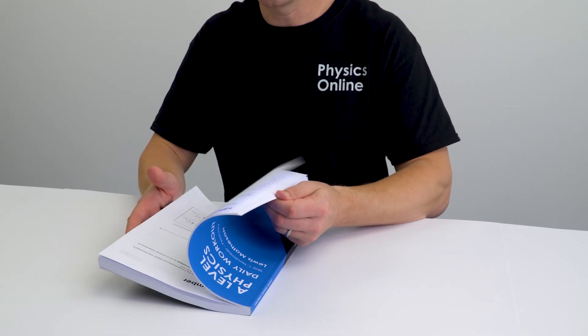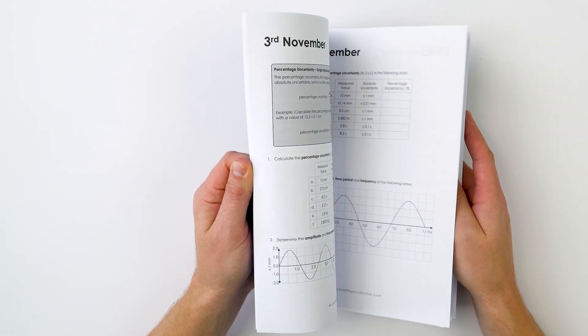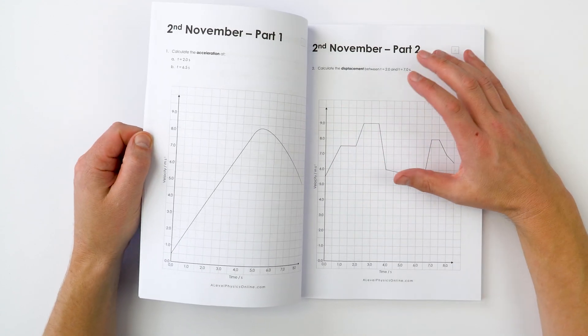Book two starts from the 1st of November and every day there's a few quick questions that you can have a go at to really build your deeper understanding of physics. A lot of it's based on recalling information from GCSE but it also now goes into the new stuff you're learning in year 12, and this is suitable for all exam boards.